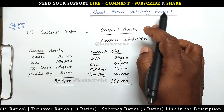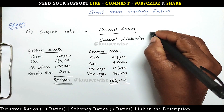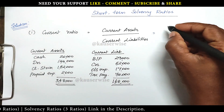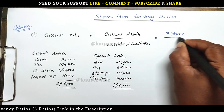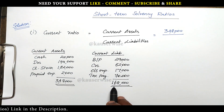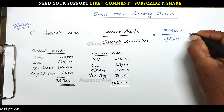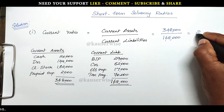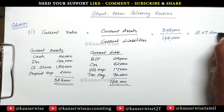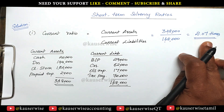Now substitute the value in the formula to find out current ratio. Current assets 3,48,000 divided by current liabilities 1,68,000. The answer is 2.07 times. So this is the current ratio.